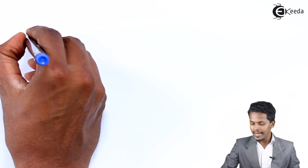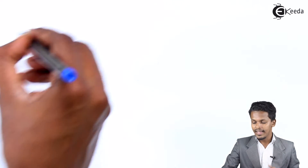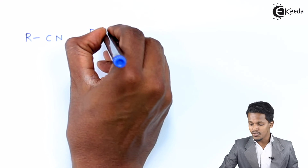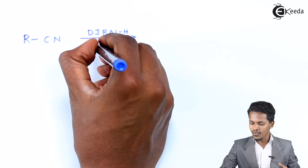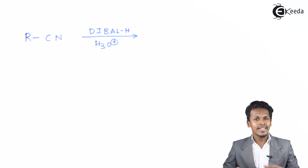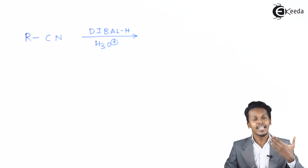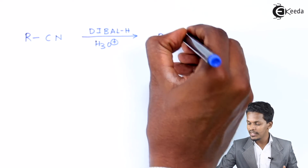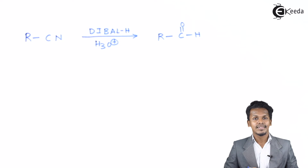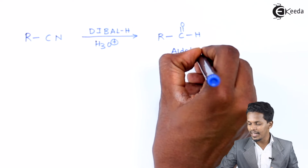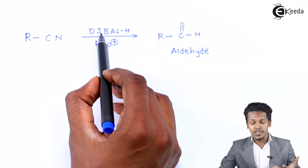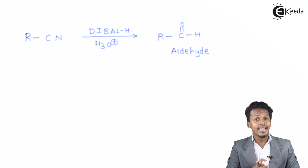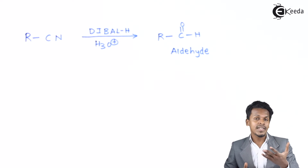The first reaction: when an alkyl cyanide (RCN) is treated with diisobutyl aluminum hydride (DIBAL-H) in the presence of an acidic solution (H3O+) — as you know, there are multiple bonds between carbon and nitrogen — DIBAL-H acts as a reducing agent and converts the cyanide group into an aldehyde group. So the product formed is an aldehyde. This is how we can prepare an aldehyde by reducing an alkyl cyanide using DIBAL-H.